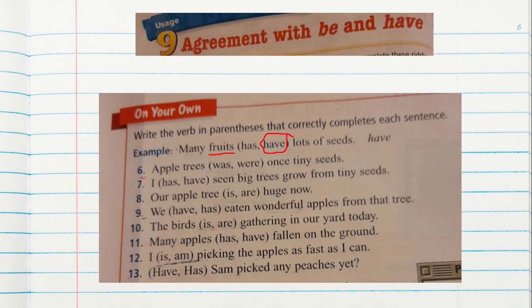Let's go to number six. Apple trees was/were once tiny seeds. We know that the subject is trees — underline the subject first. Trees is plural, so the word were is used for plural subjects. Apple trees were once tiny seeds. Number seven: I has/have seen big trees grown from tiny seeds. We know that the form of the verb we use with I is have. I have.